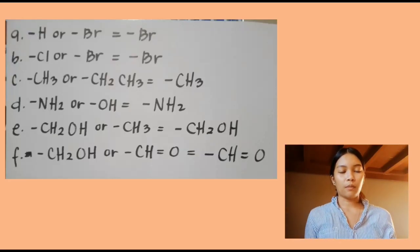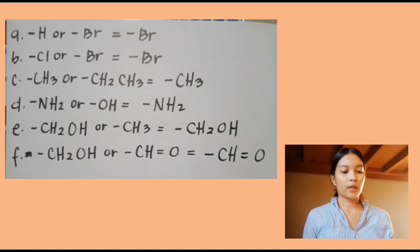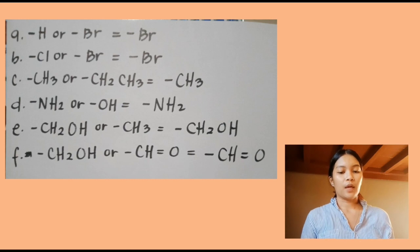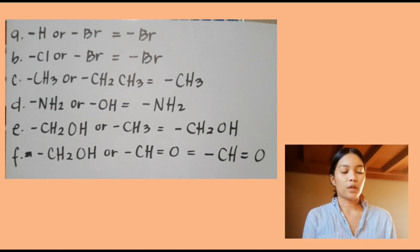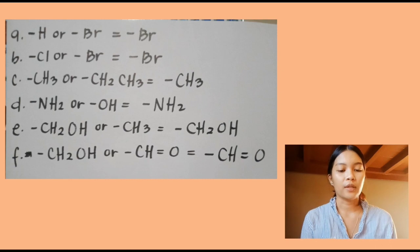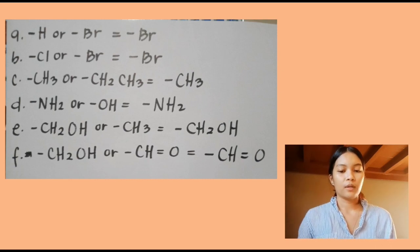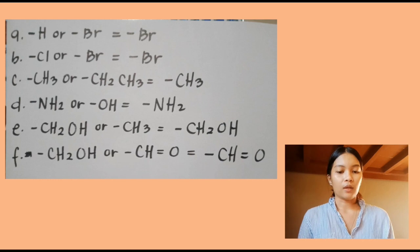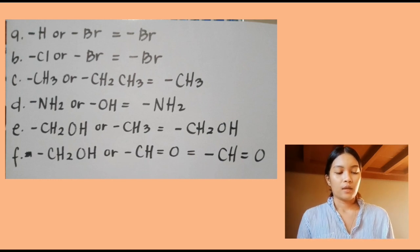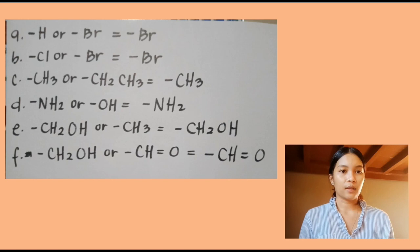Lesson 7, number 1: Which member in each of the following sets ranks higher? Letter A: negative H or negative BR? The higher rank here is negative BR. Letter B: negative CL or negative BR? The higher here is negative BR.